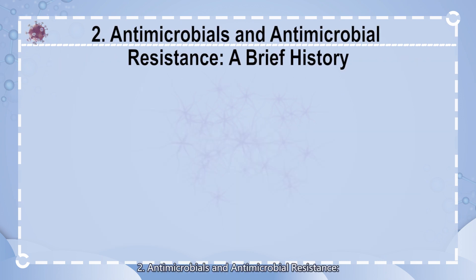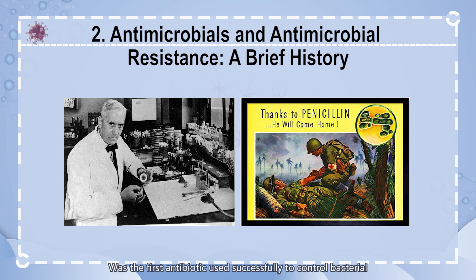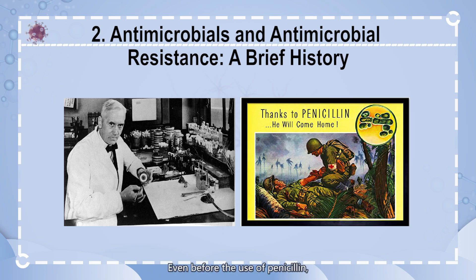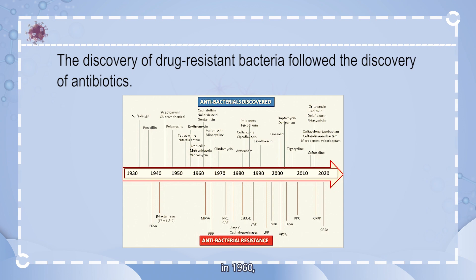Section 2: Antimicrobials and antimicrobial resistance — a brief history. Penicillin, discovered by Fleming in 1928, was the first antibiotic used successfully to control bacterial infections in soldiers during World War II. However, even before its widespread use, as early as 1940, the first penicillin-resistant Staphylococcus strain had already been described. To counteract this, methicillin was introduced in 1959, and just one year later, in 1960, a methicillin-resistant Staphylococcus strain was reported.